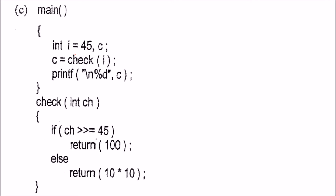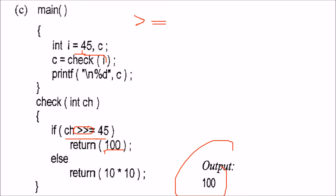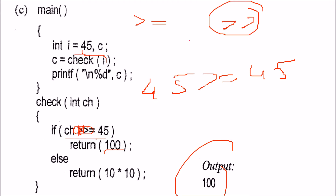We have i equal to 45 and we want to send this i to a function and check some condition. If we assume the operator is greater than or equal to, we will get 100 as output. Because 45 is greater than or equal to 45, so 100 will come.